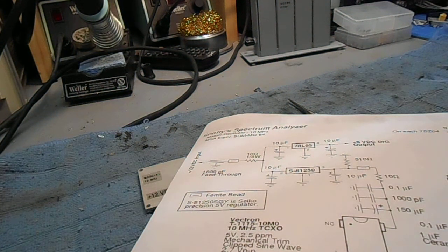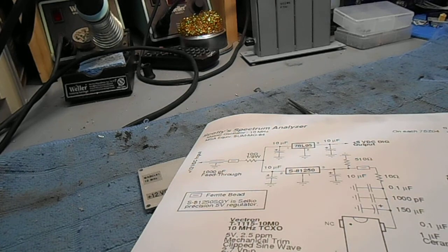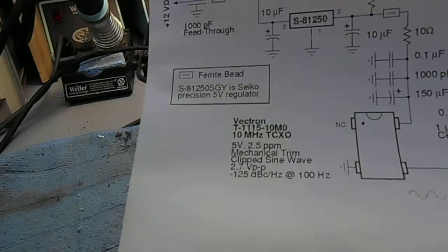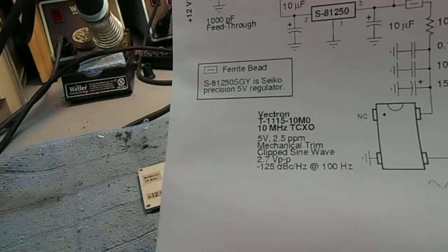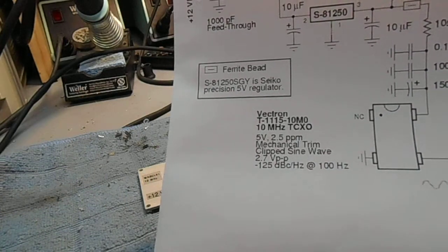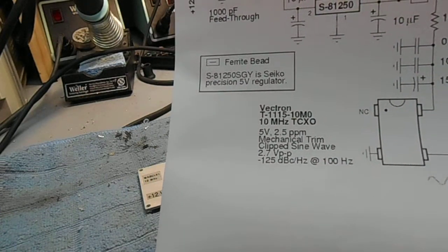This is the overview of the construction of the master oscillator for the Scottie Spectrum Analyzer project. The biggest difference is we're going to be using a 10 megahertz temperature compensated crystal oscillator instead of the recommended 64 megahertz oscillator.